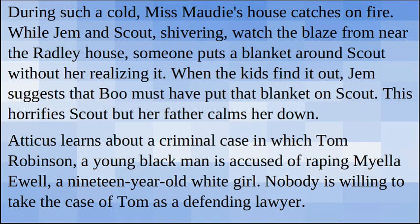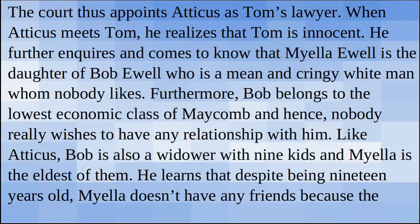Atticus learns about a criminal case in which Tom Robinson, a young black man, is accused of raping Mayella Ewell, a 19-year-old white girl. Nobody is willing to take the case as a defending lawyer, so the court appoints Atticus as Tom's lawyer. When Atticus meets Tom, he realizes that Tom is innocent. He further inquires and comes to know that Mayella Ewell is the daughter of Bob Ewell, a mean white man whom nobody likes. Bob belongs to the lowest economic class of Maycomb and hence nobody really wishes to have any relationship with him.